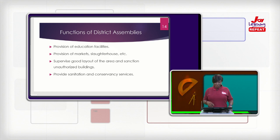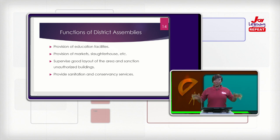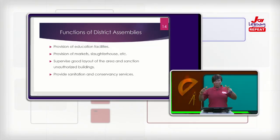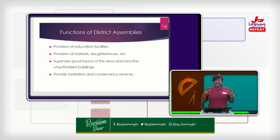Apart from that, they also help in the provision of markets, slaughterhouses, and recreational facilities. When you come to Accra, you go to Makola, Agbogbloshie, and other areas — these are markets structured by the district assemblies to aid in commercial functions and businesses.